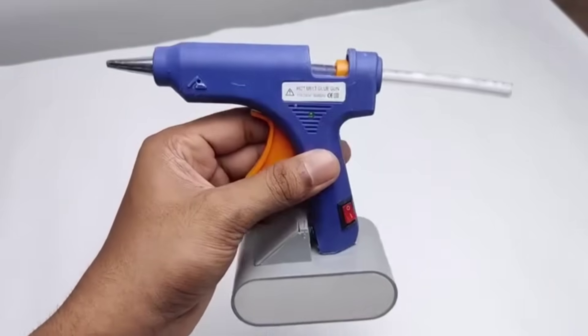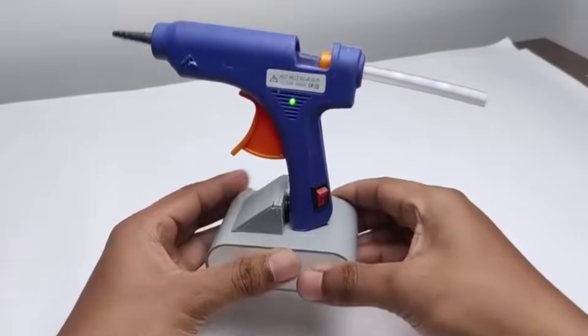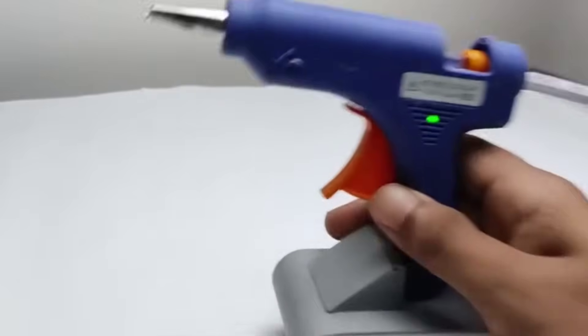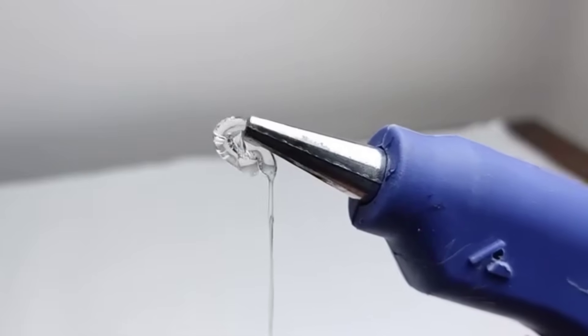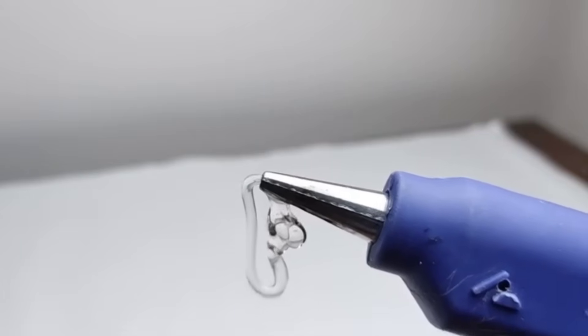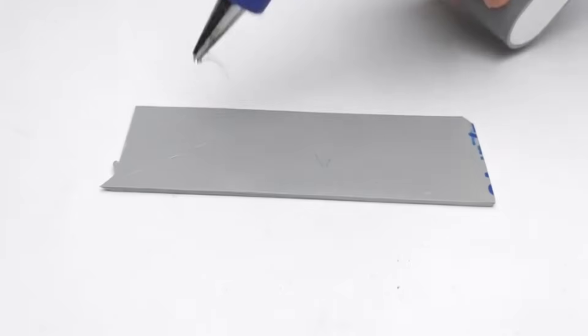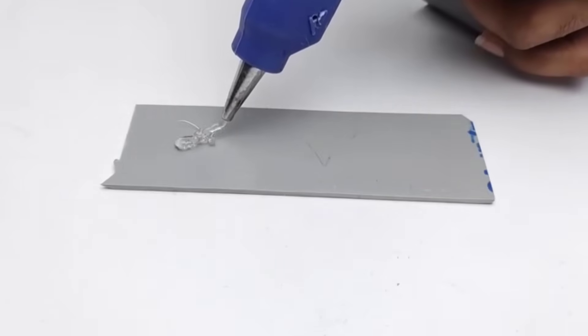Next, we insert the glue stick into the gun and prepare it for testing. After making sure it's properly in place, we turn the switch on. Within just a few seconds, the glue gun heats up and as you can see, the melted glue flows out smoothly and consistently. This shows that our assembly and wiring were done correctly and the glue gun is now fully functional and ready for use.